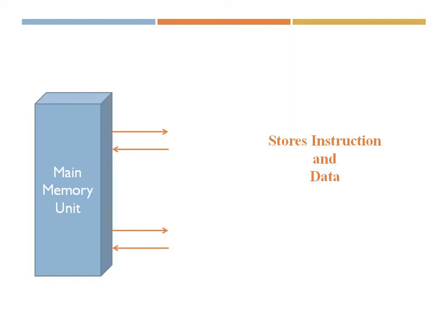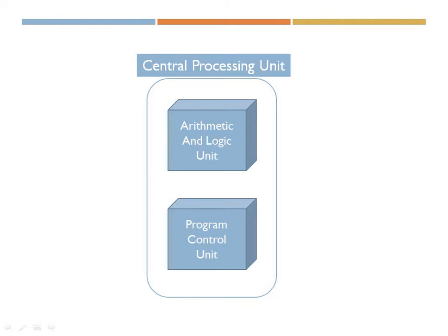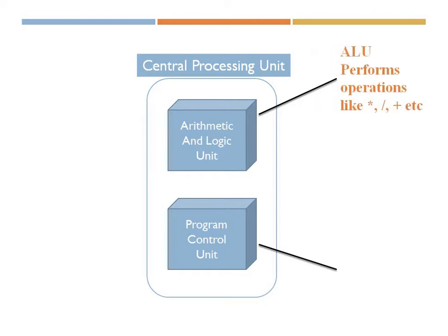Next is the central processing unit. It consists of two major components that work in harmony to give us an output. The first is the arithmetic and logic unit, or ALU. The ALU performs all arithmetic and logical operations such as multiplication, division, and addition on the data that it receives from the memory.